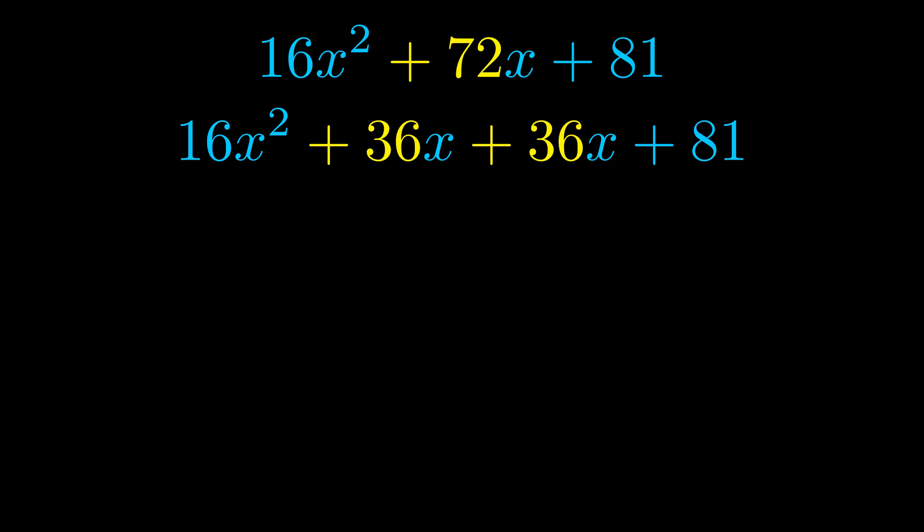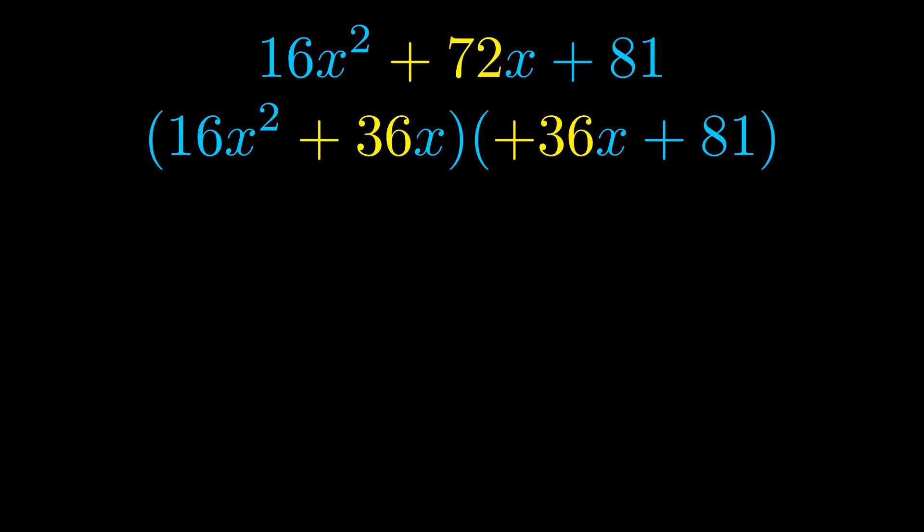Once we've done this we go ahead and we put parentheses around the first term and the last term. And we do that so that we can take the greatest common factor out of both terms. We can see the greatest common factor is now outside in green.